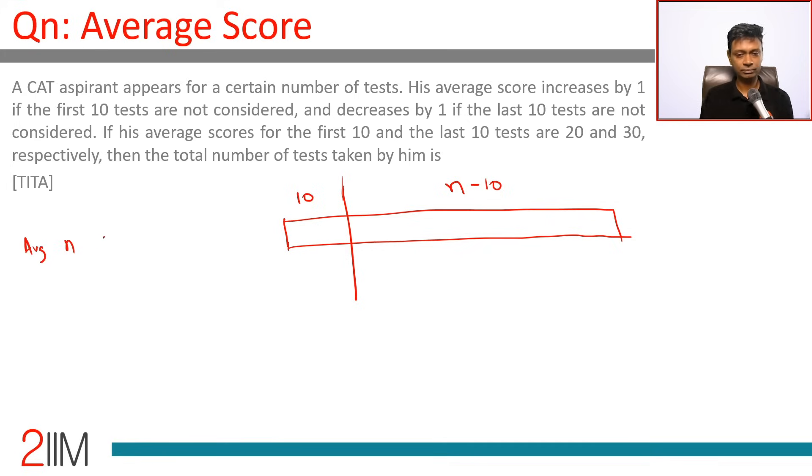Average of n is some number k, average of last n minus 10 is k plus 1.